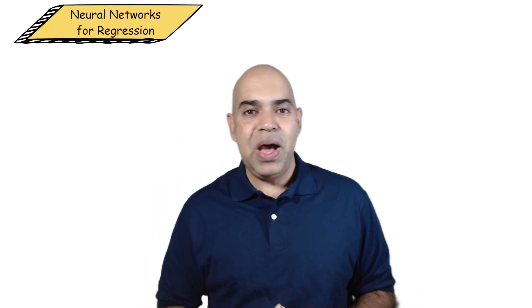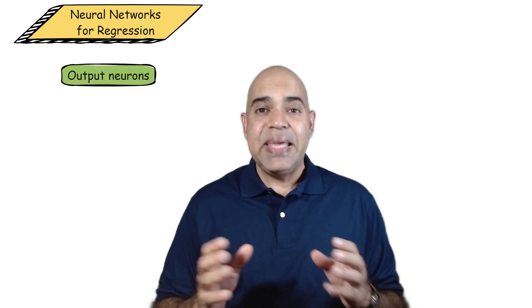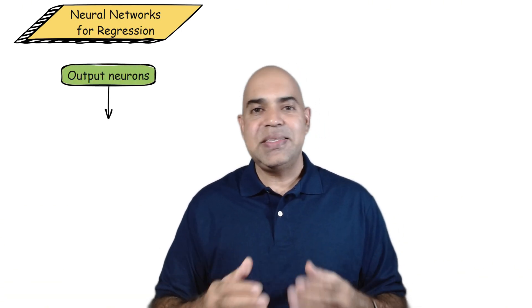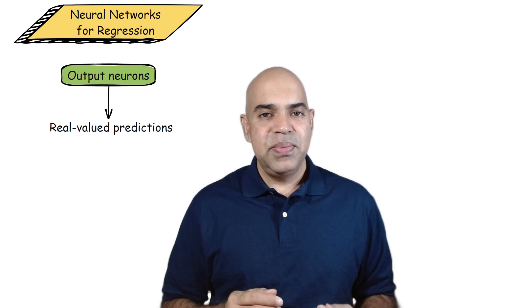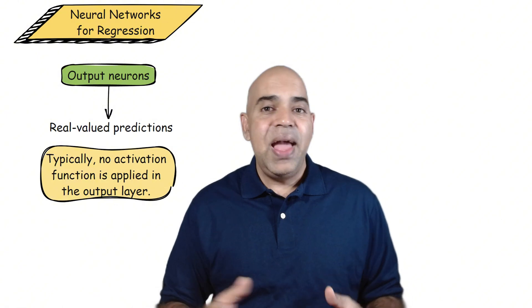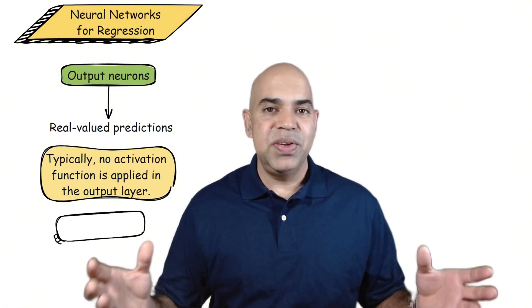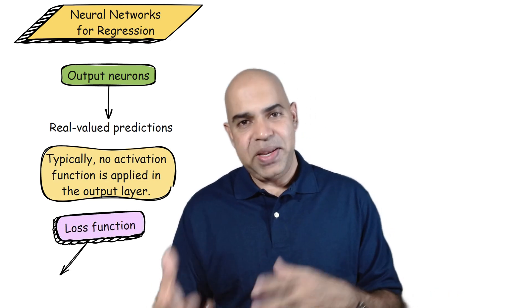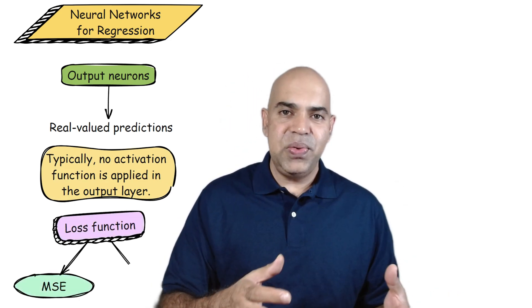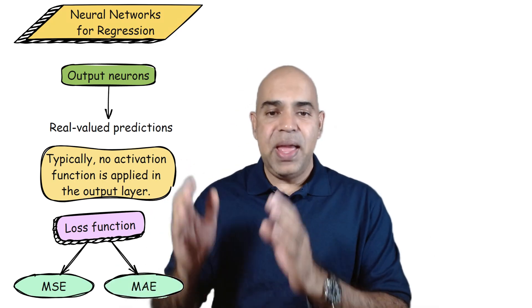In neural networks for regression, the model can have either a single output or multiple outputs depending on whether you are predicting one or multiple values. Each output neuron represents a real valued prediction. Typically, no activation function is applied in the output layer, allowing the network to predict any real number in regression problems. The loss function is of a mean squared error or mean absolute error, which measures the difference between the predicted and actual values.